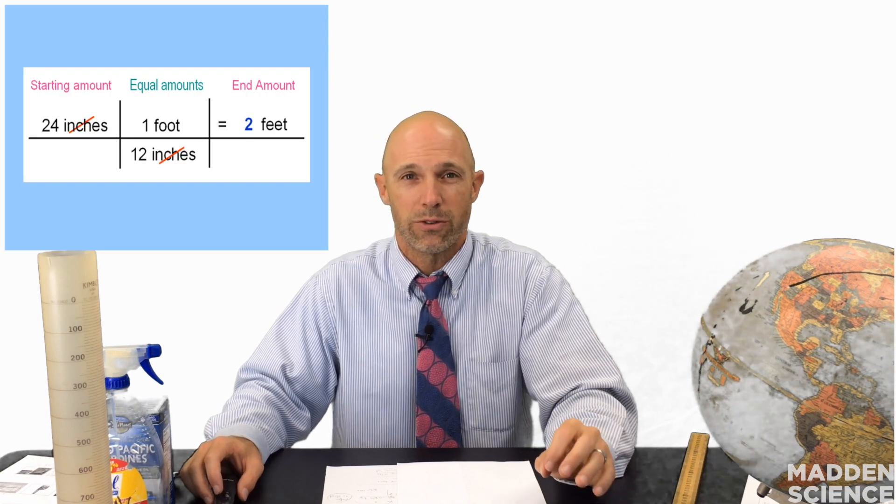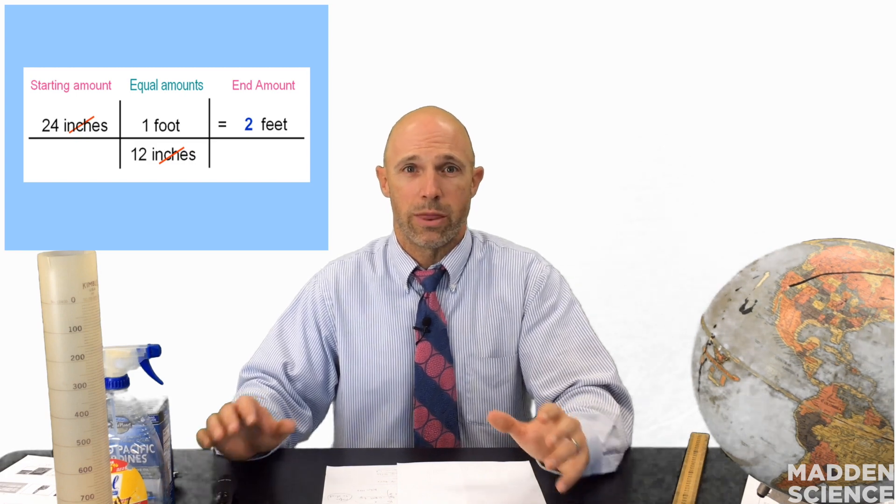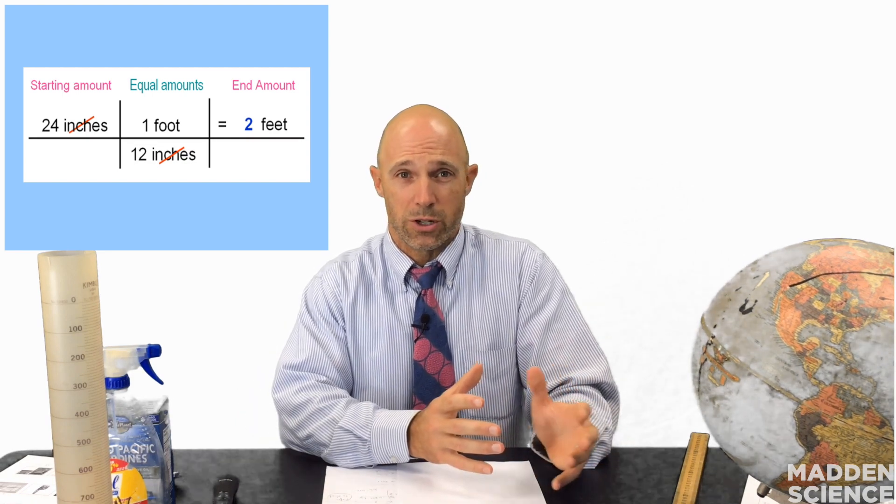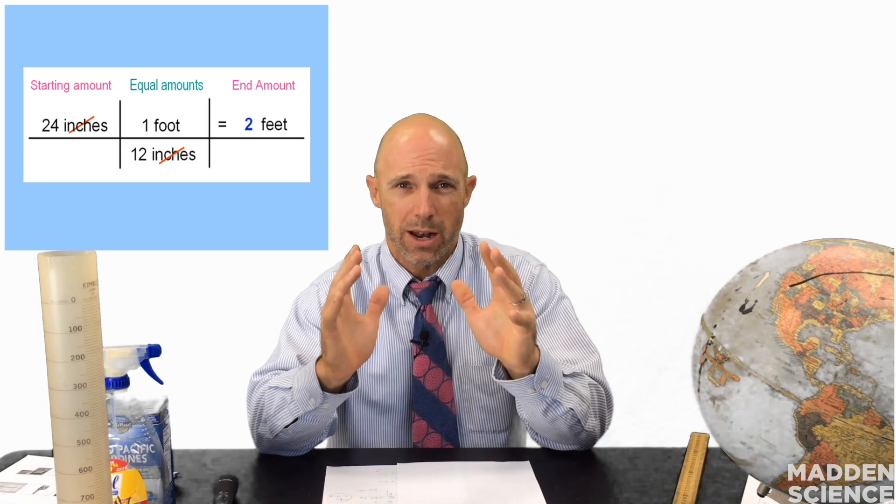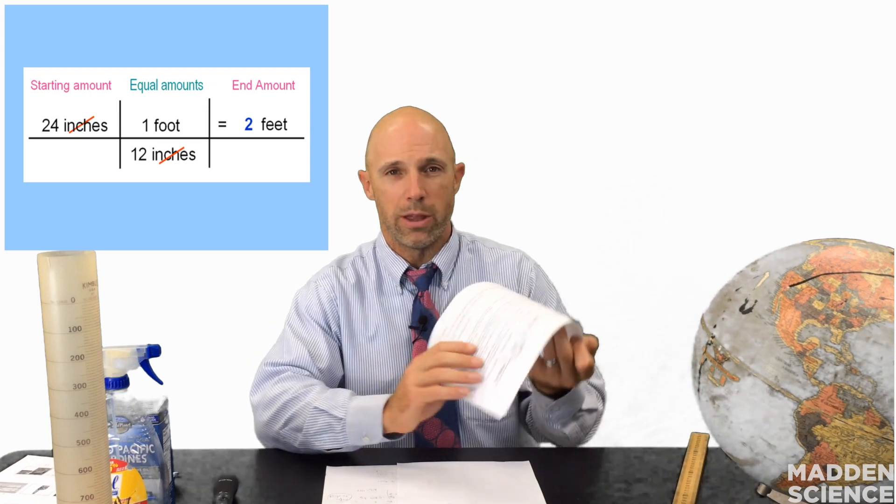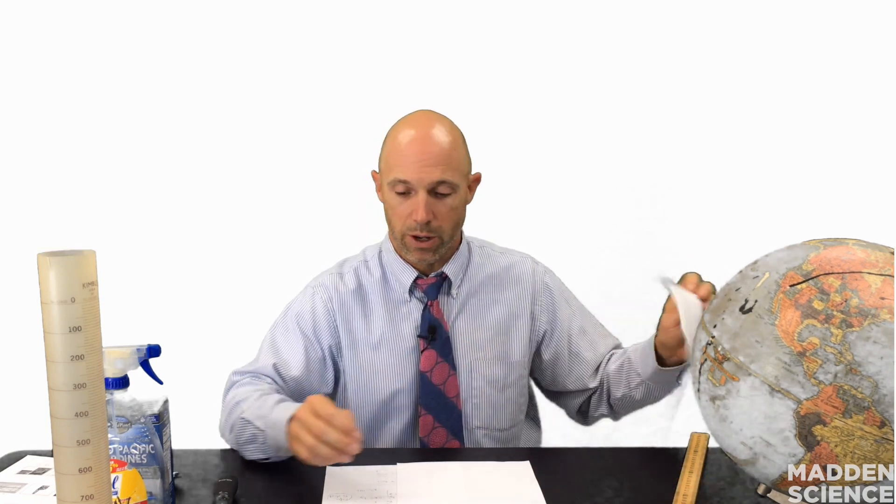Here's our general setup for a dimensional analysis or conversion problem. Notice that you're starting with a beginning or starting amount, 24 inches. You then have an end amount that you're searching for, which would be how many feet is 24 inches, and then in the center it's going to be our equivalency statement or our equal amounts. You'll note that this is seen on your conversion sheet so we're going to follow along with that same basic setup.